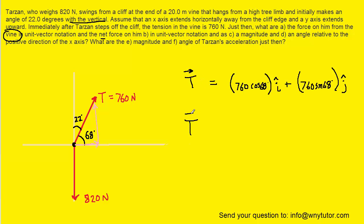And when we do that we can see that the tension in unit vector notation is approximately 285 newtons, and that will be i hat. And then we have approximately 705 newtons j hat. So this would be the correct answer for part A.